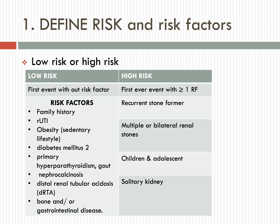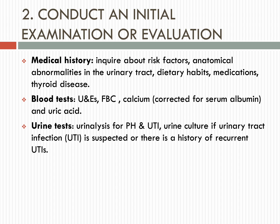The first step is to determine a patient's risk of developing further stone formation, so that resources are directed where they are likely to have the most benefit. Low-risk patients are those with a first-ever event without any risk factors. Risk factors include family history, recurrent urinary tract infections, obesity, sedentary lifestyle, type 2 diabetes mellitus, primary hyperparathyroidism, gout, nephrocalcinosis, distal renal tubular acidosis, and bone or gastrointestinal diseases. High-risk patients are those with a first-ever event plus one or more risk factors, recurrent stone formers, those with multiple or bilateral renal stones, and children, adolescents, or those with a solitary kidney.